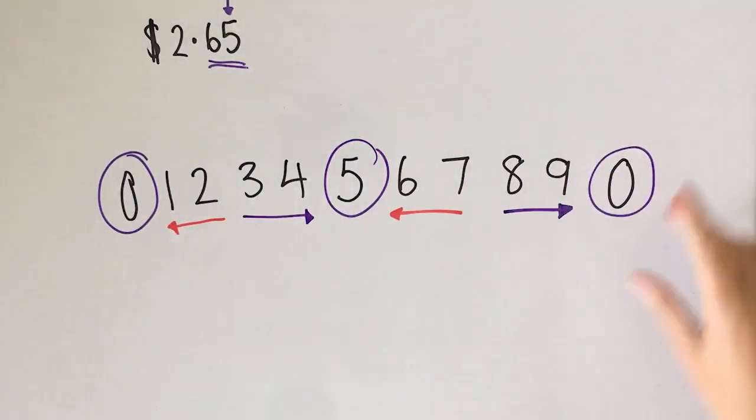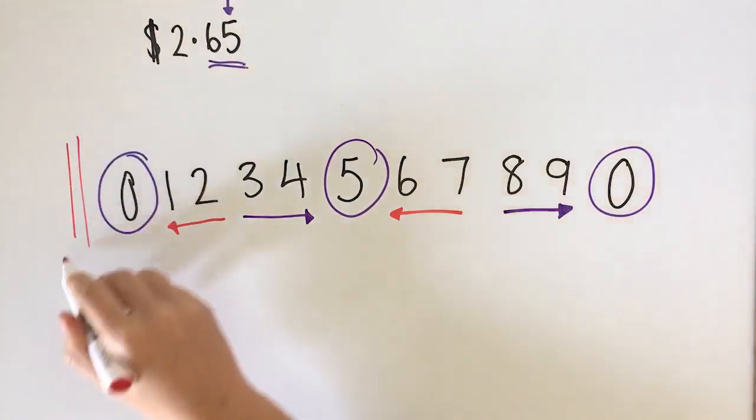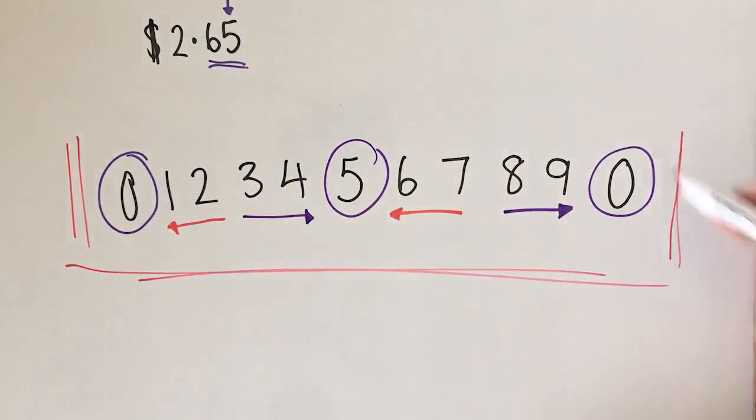This is like your cheat sheet or the rules of when we round what goes where. Make sure that you write this down with the arrows so it can really help you with the next three examples that we're going to do.